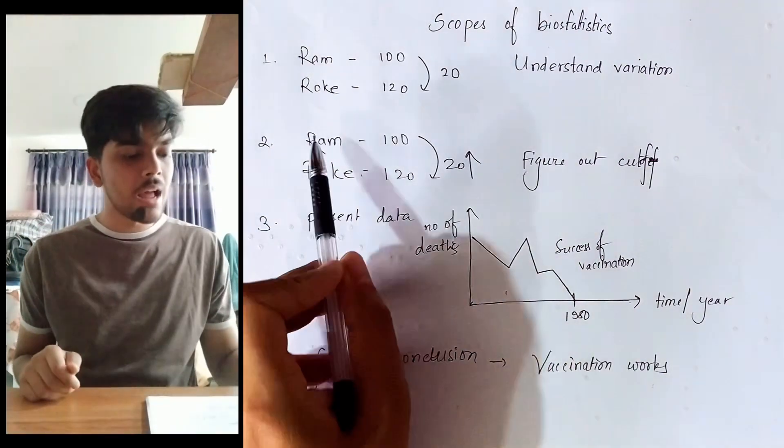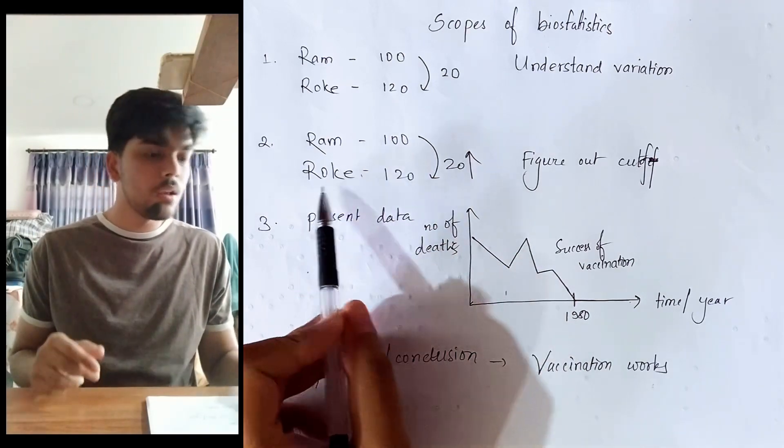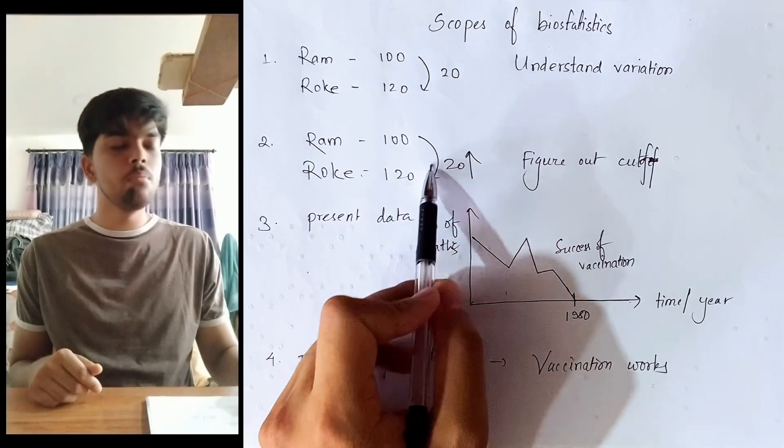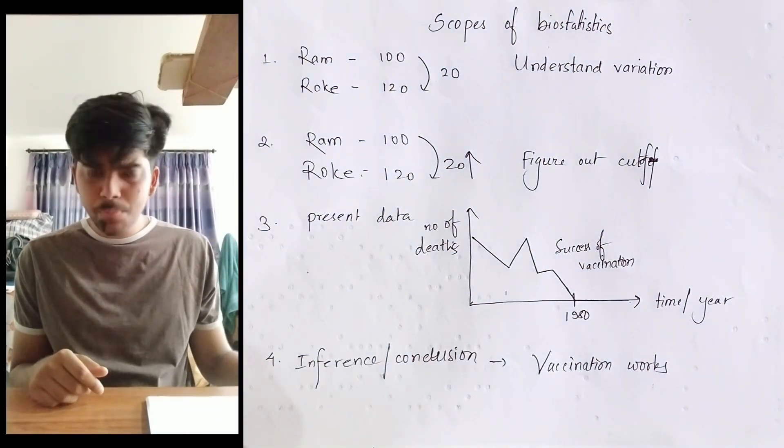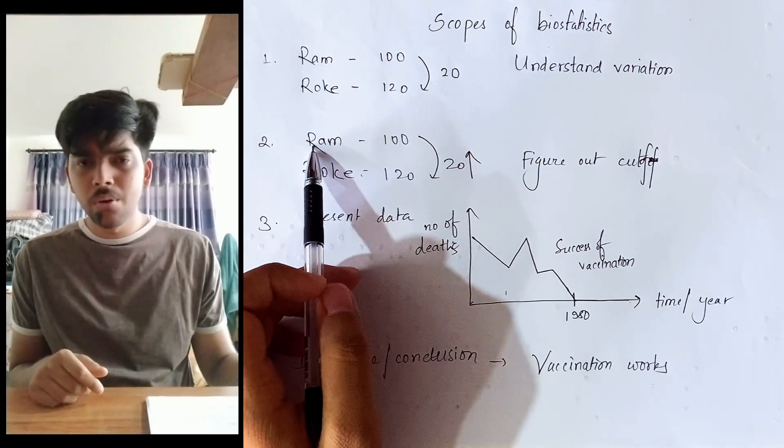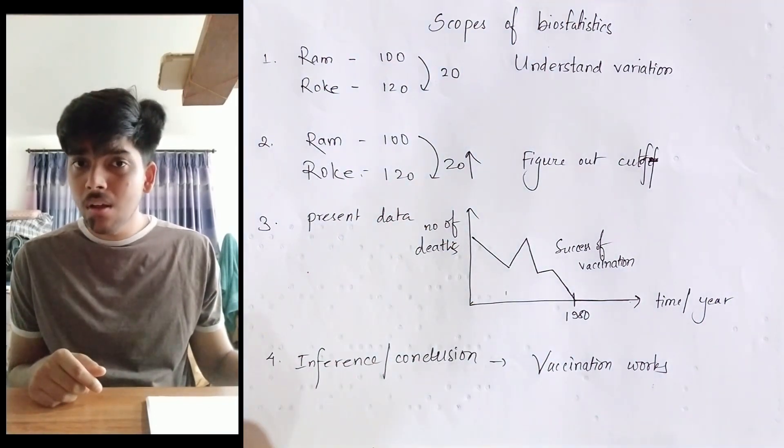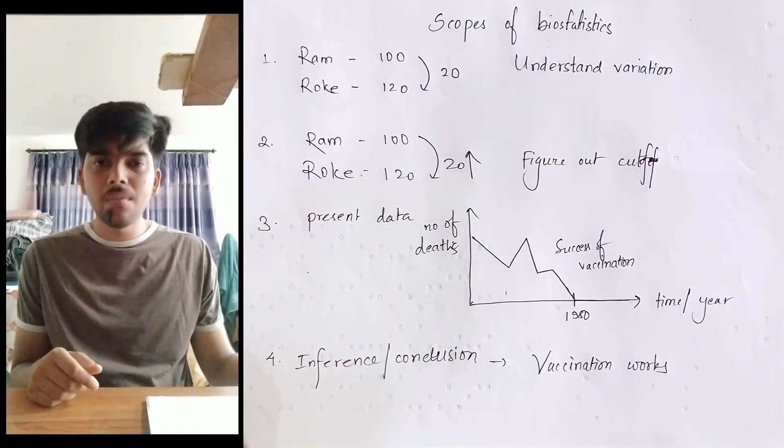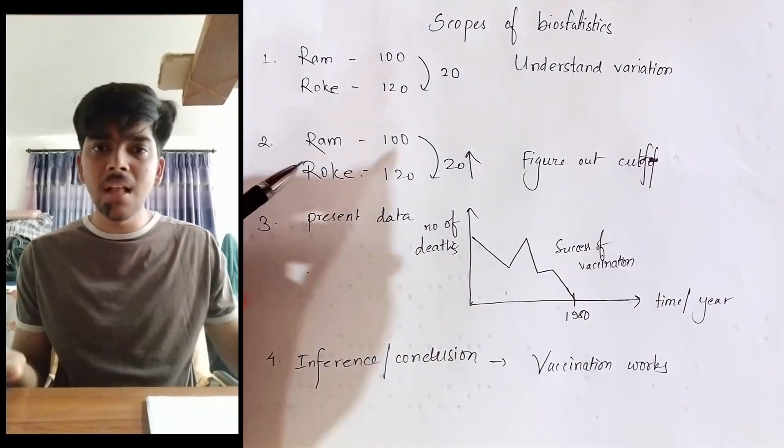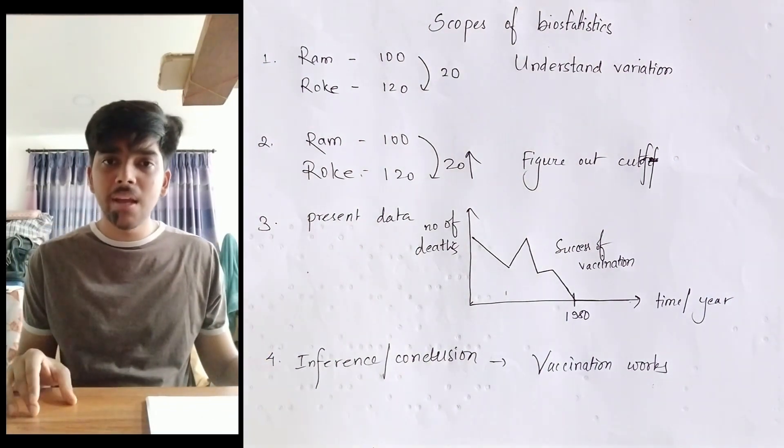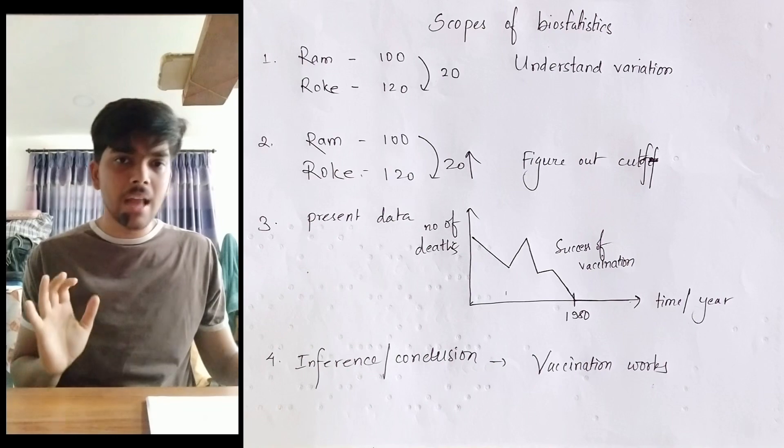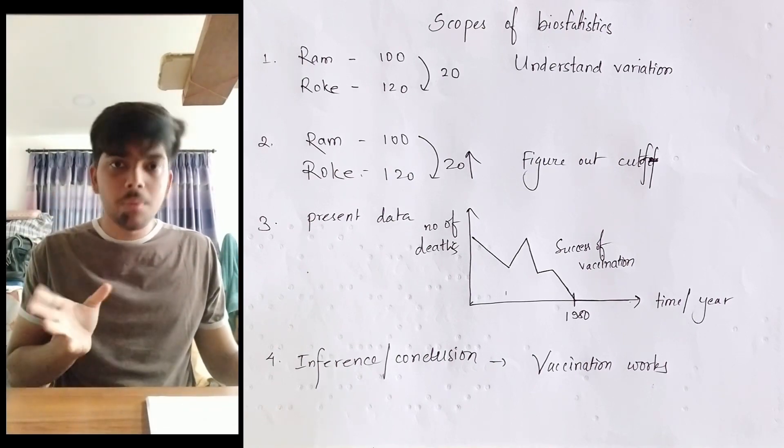Number two: Ram sugar level fasting 100, Roke sugar level fasting 120. The sugar level fasting of Roke is 20 more than Ram. Does this mean that Roke is diabetic and Ram is healthy? Or does it mean that both of them are diabetic? Or does it mean that none of them are diabetic? Who exactly is diabetic here and who is healthy?